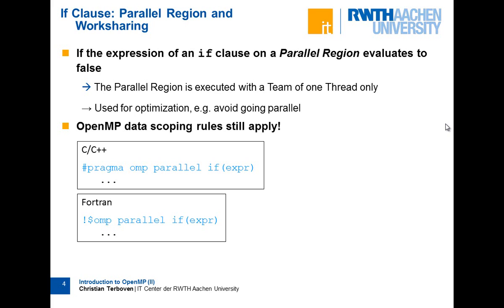The 'if' clause at the parallel region can help with that. You can put in an expression, and if this expression evaluates to true, the parallel region will be executed as usual — a team of threads will be created. If the expression evaluates to false, for example if the matrix dimension is less than 1000, then the parallel region will be executed with one thread only. So the overhead of thread creation and possibly privatization of data can be avoided.